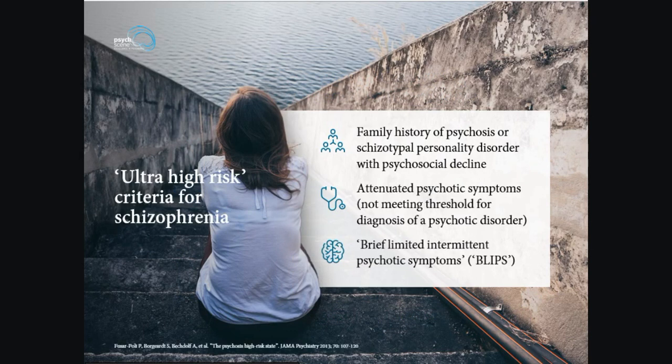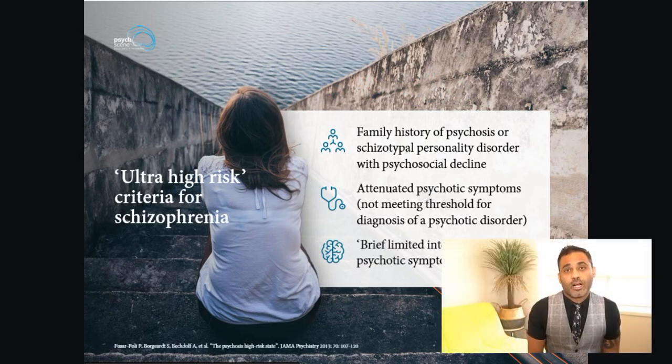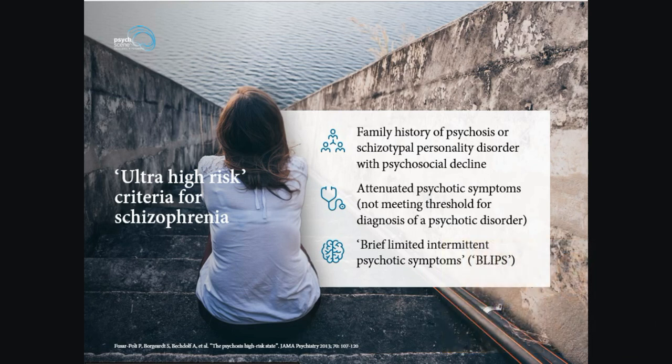There are also individuals who are at ultra-high risk and fulfill ultra-high risk criteria for schizophrenia, where we need to monitor them closely. These include individuals with a family history of psychosis or schizotypal personality disorder with psychosocial decline, attenuated psychotic symptoms not meeting threshold for a diagnosis of psychotic disorder, and a third category called BLIPS — brief, limited, intermittent psychotic symptoms.